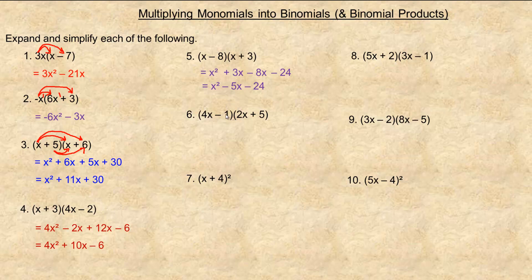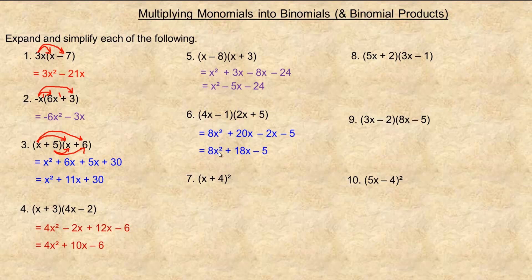For question six: 4x times 2x is 8x squared, then 4x times five is 20x. Negative one times 2x is minus 2x, and negative one times five is minus five. Like terms in the middle: 20x minus 2x is 18x. So the answer is 8x squared plus 18x minus five.